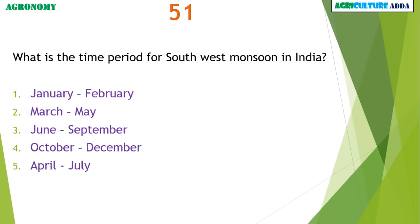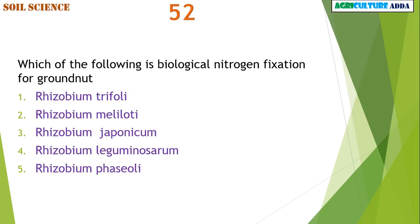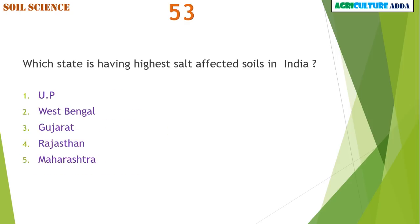What is the time period for southwest monsoon in India? June to September. Which of the following is biological nitrogen fixation for groundnut? Rhizobium japonicum. Which state has the highest salt-affected soils in India? Gujarat.